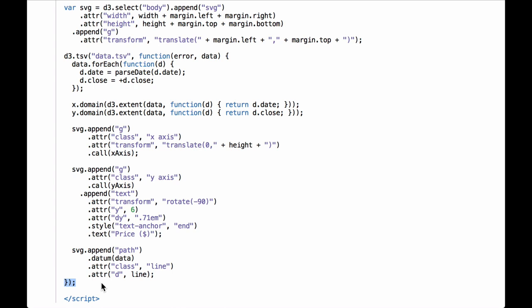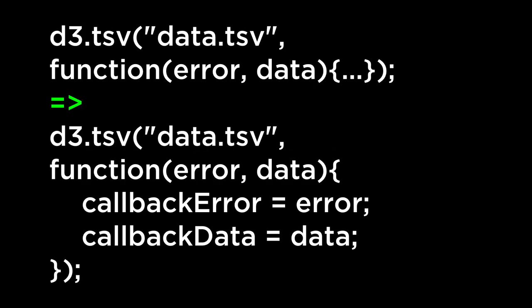Let's now build this part by part in JavaScript. Because the building of the chart happens inside the callback function, we will use a simpler anonymous function. We do this for two reasons: one, it is easier to do on the JavaScript console as we build the chart piece by piece; and two, it reinforces the idea of the callback function and how it works. The preferred way of coding it in your web page is the way it's done in the example, as it makes clear that it is a callback function and keeps everything in one place.